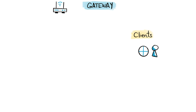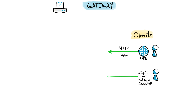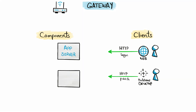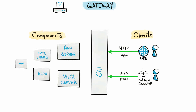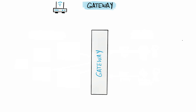On one hand we have requests coming from different clients, like a login request from a web browser or a publish request from Tableau Desktop. On the other hand we have different Tableau Server components like the App Server, VizQL Server, and so on. The gateway sits in the middle and knows how to forward requests from different clients to the right server components. Another task of the gateway is load balancing.